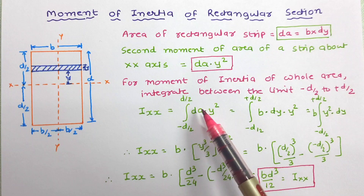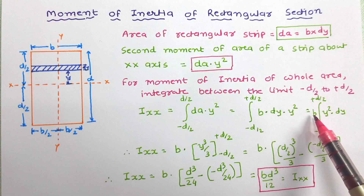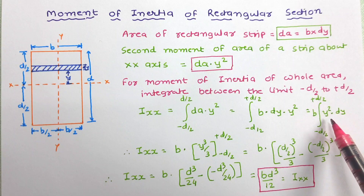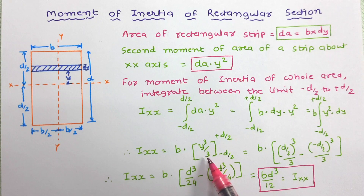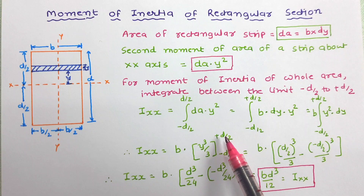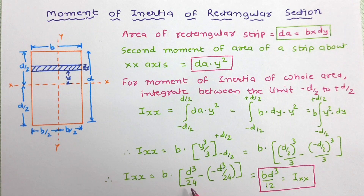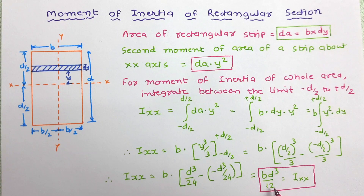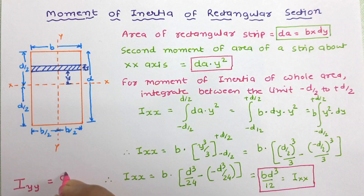Here, dA is replaced by the area of the rectangle strip, b times dy. The constant b is taken out and the integration of y squared with respect to dy is performed. Integration of y squared gives y cubed by 3. Applying the limits minus d by 2 to plus d by 2 and simplifying, Ixx is obtained as bd³ by 12. So the moment of inertia of the rectangle about centroidal axis XX is bd³/12, and about the YY axis it is db³/12.